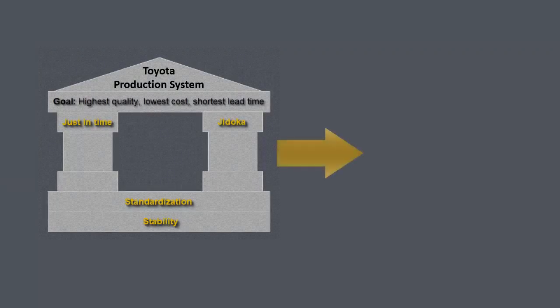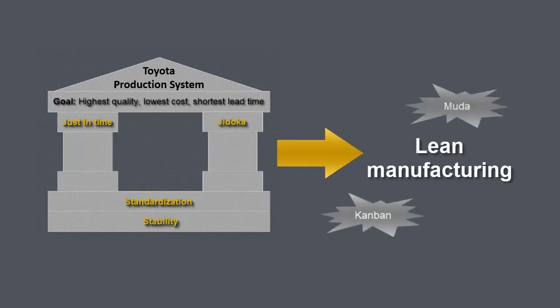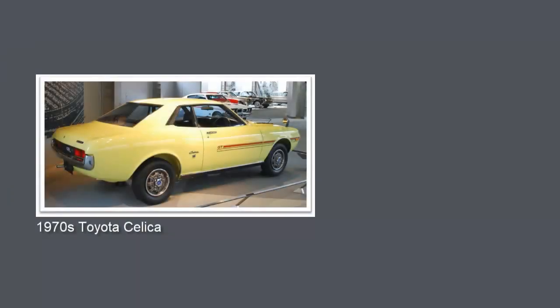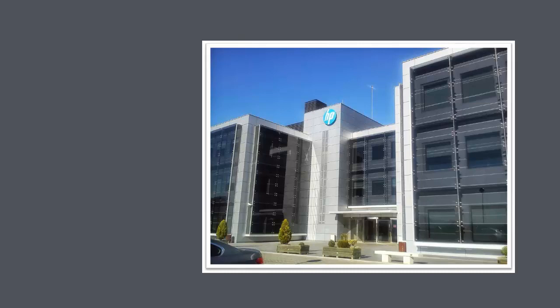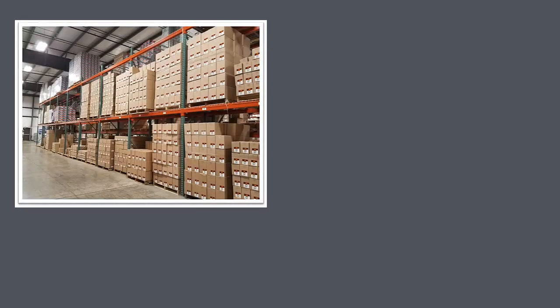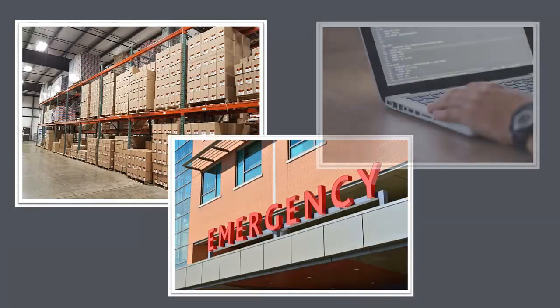We generally consider the TPS the precursor of lean manufacturing, which is why lean uses some Japanese terms, like Kanban, Muda, and Kaizen. By the 1970s, Toyota's Japanese automotive plants were significantly outperforming plants outside of Japan, and Western manufacturers, not just automotive manufacturers, slowly began to adopt TPS and lean techniques. In the years that followed, lean has become commonplace in manufacturing and has been applied in other industries like healthcare and software development.